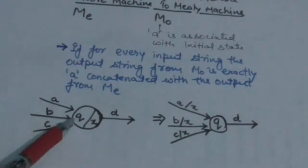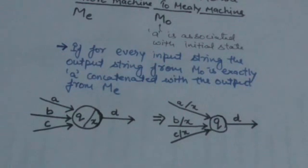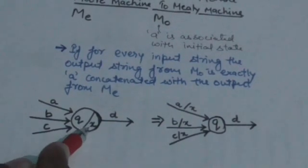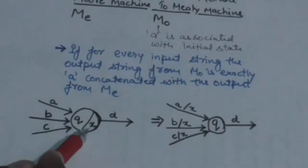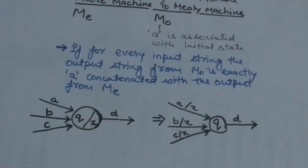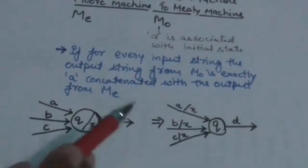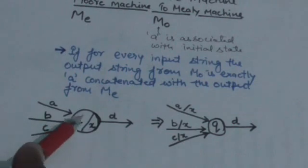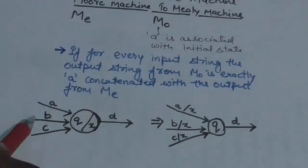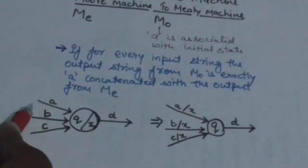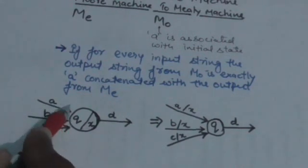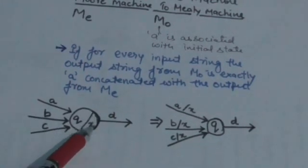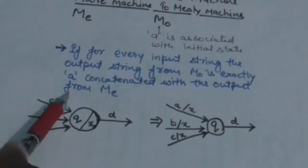The states from which these transitions come are not mentioned in this diagram. Now what we have to do is associate this output with the transition, which is currently associated with the state. So I will remove this output symbol from the state and label all incoming edges to this state with this output.